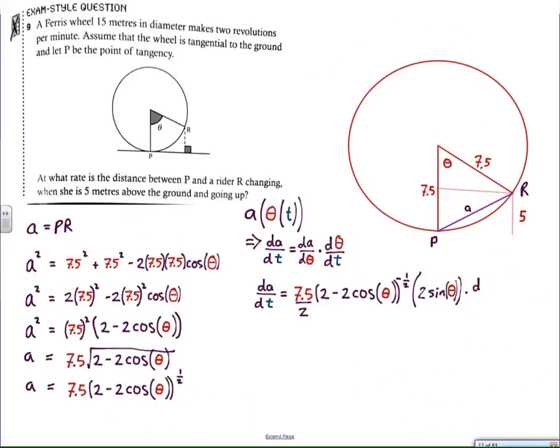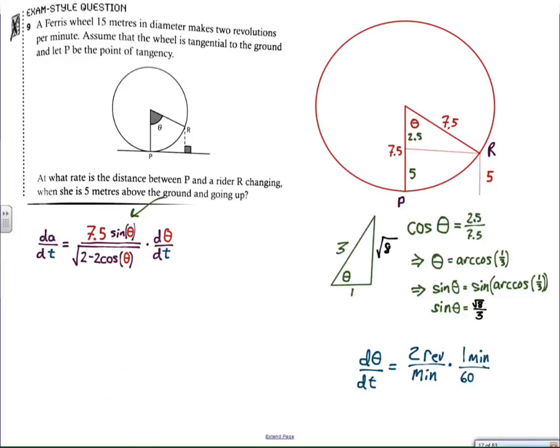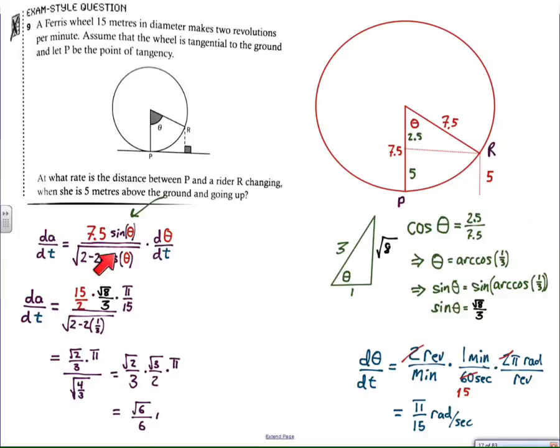What's important here is the process. A quick overview of related rates: identify what's changing, then write an equation that has that changing variable as its focus. Take the derivative with respect to time of that function, and then look for all the different pieces within the given information, because seek and you will find. Hope this was helpful. Thanks for watching. Have a great day.